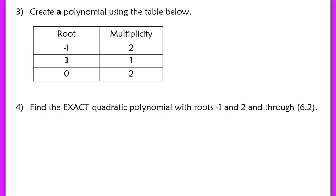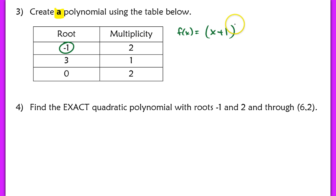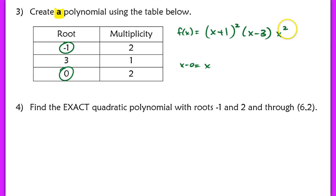In number 3, I just want to do a problem that's a review before we get to number 4. Here I'm asking you to create just a general polynomial using the table. I see a root at negative 1, so a factor is (x plus 1) with multiplicity 2, giving degree 2. Another root at 3 gives factor (x minus 3) with multiplicity 1. And a root at 0 gives factor x with multiplicity 2. Writing this nicely: f(x) = x squared times (x minus 3) times (x plus 1) squared.